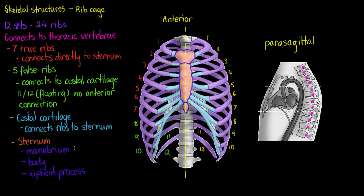Just like many other bones in the body, our sternum has a few unique features associated with it. The first one is our jugular notch, located just here.